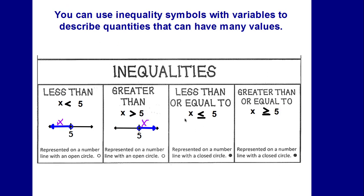Looking at less than or equal to — x is less than or equal to 5 — the number line would look like this. The difference with this one is that our circle is now closed; it is filled in. That is because 5 is a possible solution for x — 5 is included in the solution set, so we fill in the circle. And if x is greater than or equal to 5, the number line would look like this one. Again, the circle is filled in — it is a closed circle because 5 is a possible solution; x could equal 5.